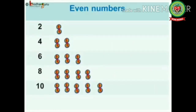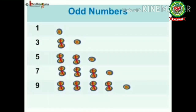Now look at the chart. In the case of two, four, six, eight, and ten, they are grouped in pairs and all come in the table of two — they are called even numbers. In the case of one, three, five, seven, and nine, they always have one remaining after forming pairs and never come in the table of two, so they are called odd numbers.